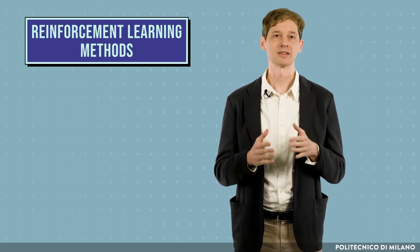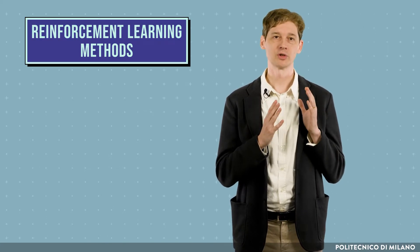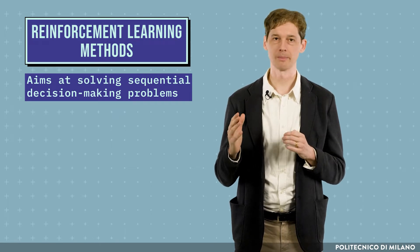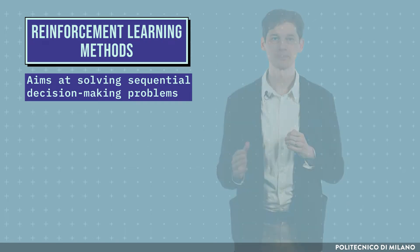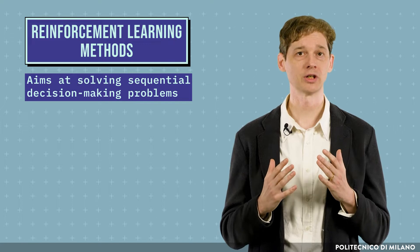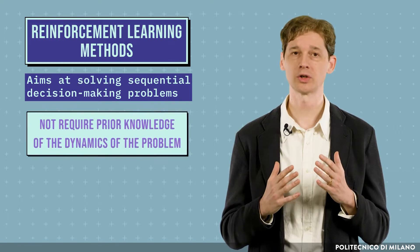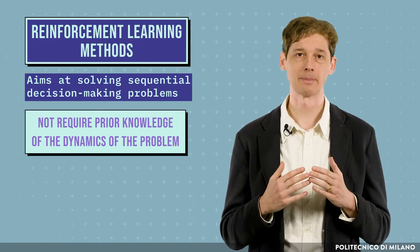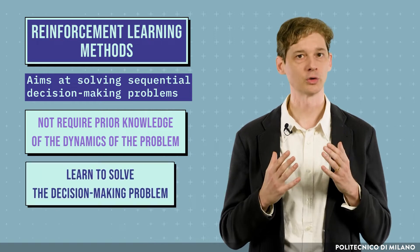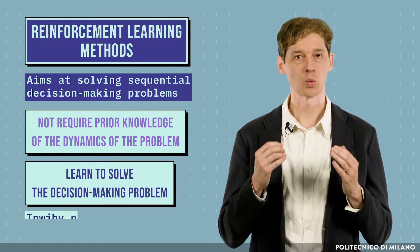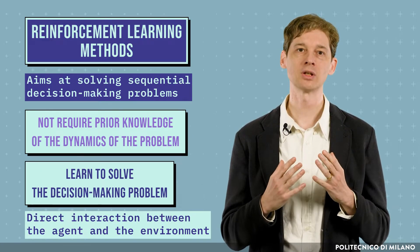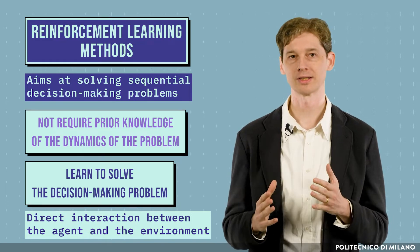Reinforcement learning is that part of machine learning that aims at solving sequential decision-making problems. Unlike traditional methods, reinforcement learning techniques do not require prior knowledge of the dynamics of the problem, as they learn to solve the decision-making problem through direct interaction between the agent and the environment in which it operates.